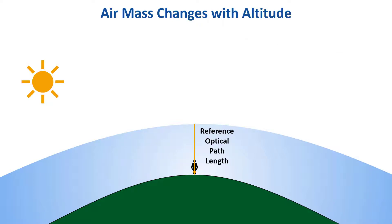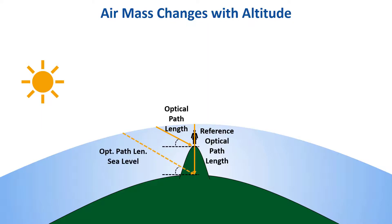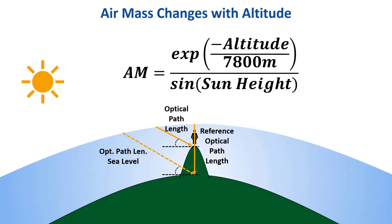The air mass will also change based on altitude. If you are standing on a mountain, the optical path length would be smaller than at sea level, while the reference optical path length stays the same. This means that the air mass decreases with altitude according to an exponential law. From this equation, at 7800 meters of altitude, there is 1/e or 37% of air above our head relative to the air at sea level. To get the air mass, we divide this quantity by the sine of the sun's height, where sun height refers to the angle between the horizontal plane and the sun's rays.